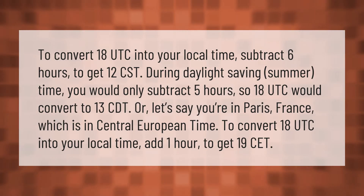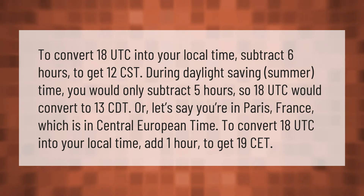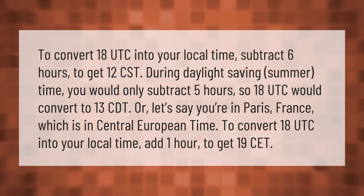To convert 18 UTC into your local time, subtract 6 hours to get 12 CST during daylight saving summer time. You would only subtract 5 hours, so 18 UTC would convert to 13 CDT. Or, if you're in Paris, France, which is in Central European Time, add 1 hour to get 19 CET.